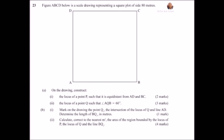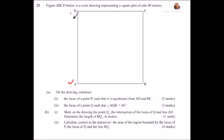We will start with A. On the drawing, construct the locus of point P such that it is equidistant from AD and BC. So this is AD here, this is D, this is B, and this is C. To draw the locus of P equidistant from AD and BC, we draw a perpendicular line of AB and DC. So that will be the locus of P.